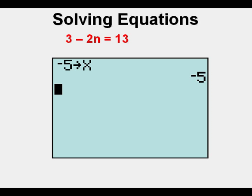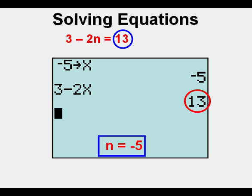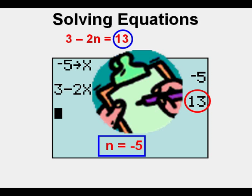So, we press negative 5, storage, x, enter. And then we enter that left side of the equation, 3 minus 2x, and since we get 13, we know that negative 5 is the correct answer. Check.